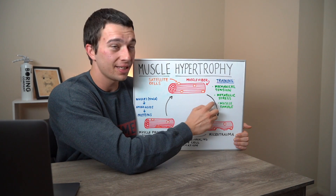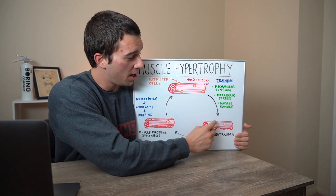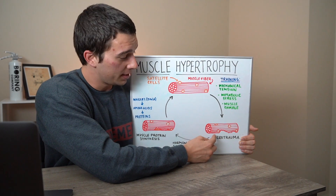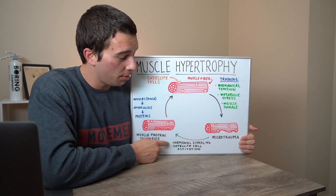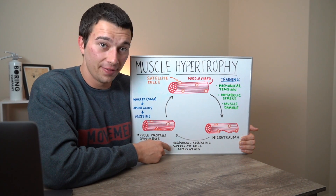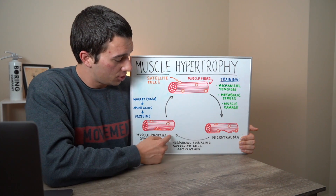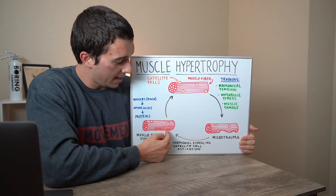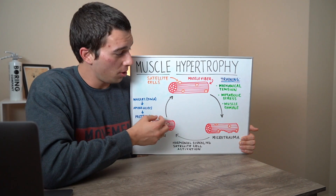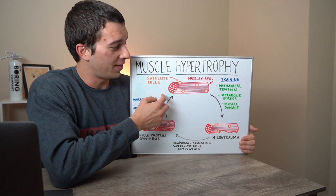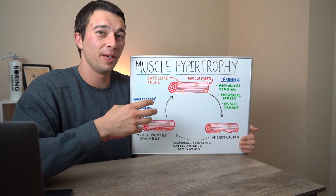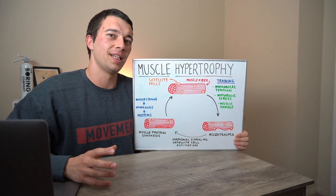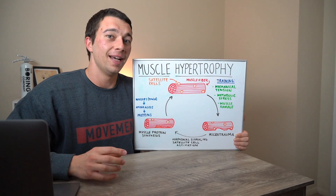To recap: we started with a muscle fiber, did training involving mechanical tension, metabolic stress, and muscle damage to cause microtrauma. We then signaled hormones and activated satellite cells to generate new muscle proteins. That added myofibrils to our muscle fiber, which made the muscle fiber bigger, which made the muscle bigger, which made your biceps bigger.